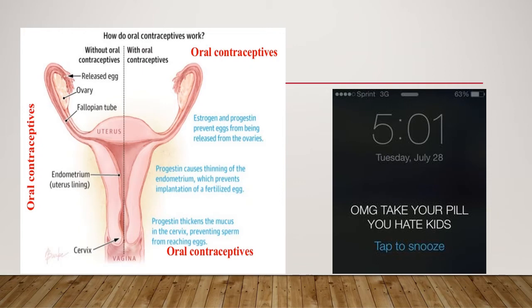So how do contraceptives work? The main mechanism of action is the prevention of ovulation by inhibiting follicular development. Progesterone negative feedback works at the hypothalamus to decrease pulse frequency of gonadotropin-releasing hormone, which in turn decreases the secretion of LH and FSH. If the follicle isn't developing, there is no increase in estradiol levels. The progesterone negative feedback and lack of estrogen positive feedback on LH secretion stops the mid-cycle LH surge. With no follicle developed and no LH surge, there is prevention of ovulation.